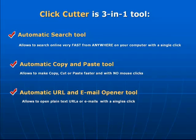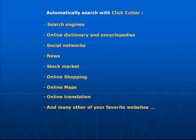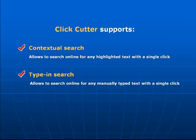The automatic search tool allows users to perform a very quick online search from anywhere with just a click of a button. You can quickly and easily get search results from favorite search engines, online encyclopedias, social networks, news, stock market, shopping sites, maps, translations, and many other favorite places. Because Clip Cutter is a standalone tool, you never have to open a browser window again when you need to search the internet.